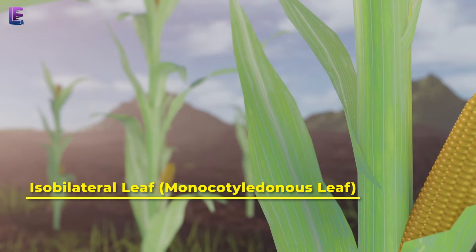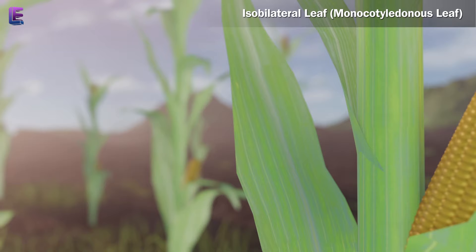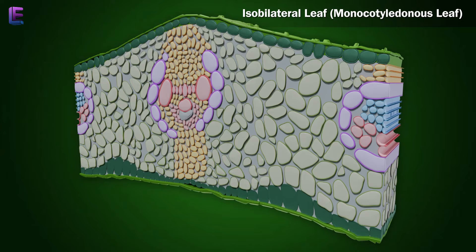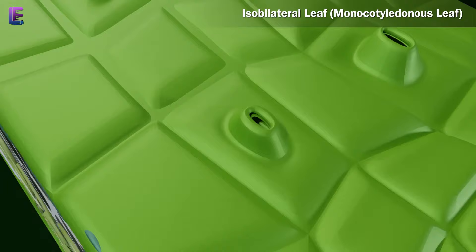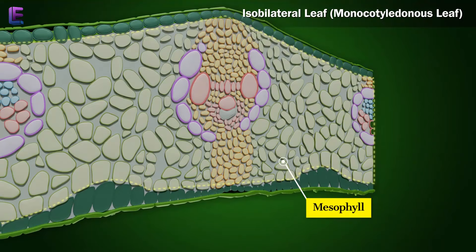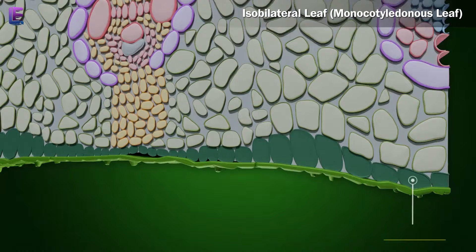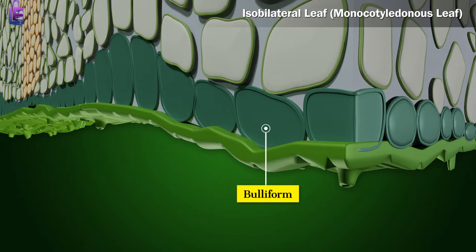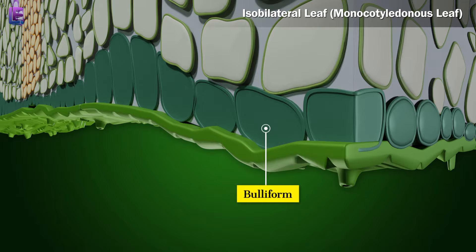Isobilateral Leaf — Monocotyledonous Leaf: The anatomy of an isobilateral leaf is similar to that of the dorsi-ventral leaf in many ways. The stomata are present on both surfaces of the epidermis. The mesophyll is not differentiated into palisade and spongy parenchyma. Large colorless cells called bulliform cells absorb water and help expose the leaf surface, thereby reducing water loss. Isobilateral leaves show parallel venation.